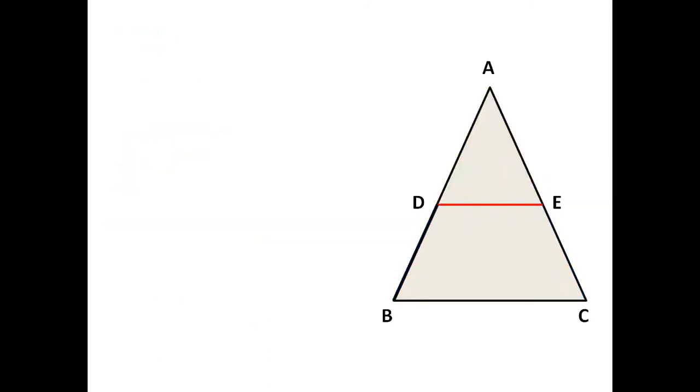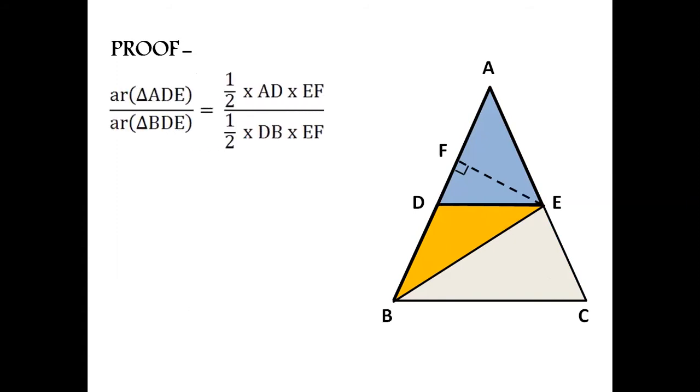Now let us prove basic proportionality theorem. First, we will see area of triangle ADE which is colored in blue and then area of triangle BDE in orange. We have a perpendicular EF drawn on AB. So we can write down area of triangle ADE by area of triangle BDE is equal to half into AD into EF divided by half into DB into EF. After simplification we get AD by DB. Name this equation as 1.